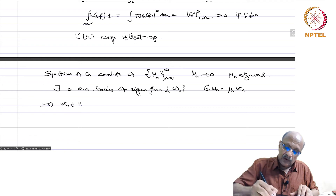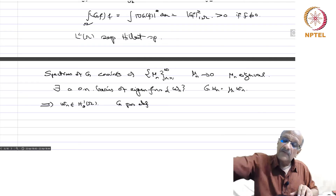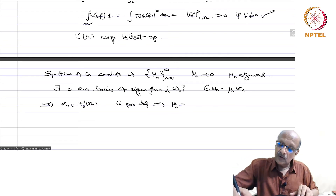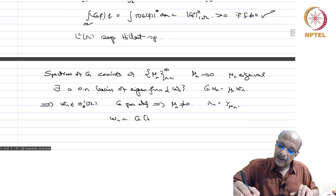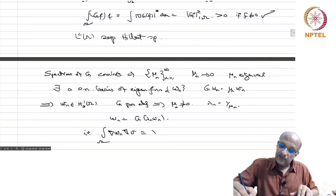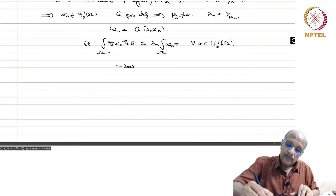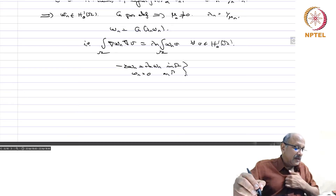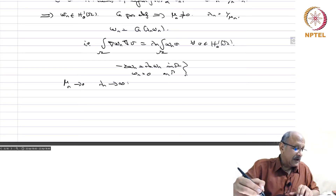This implies w_n belongs to H¹₀(omega). Since G is positive definite, mu_n is not equal to 0. Setting lambda_n equal to 1/mu_n, we have: the integral over omega of grad w_n dot grad v dx equals lambda_n times the integral over omega of w_n v dx, for every v in H¹₀(omega). Therefore, minus Laplacian w_n equals lambda_n w_n in omega and w_n equals 0 on gamma. Since mu_n goes to 0, lambda_n goes to infinity, and we can order them in increasing fashion.